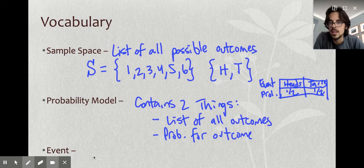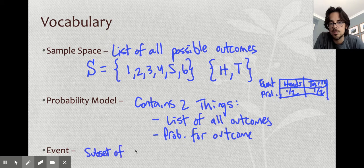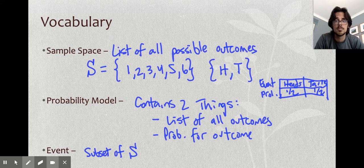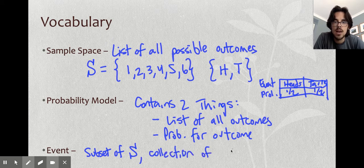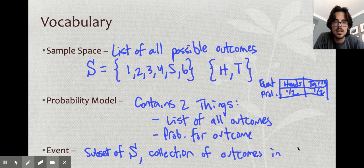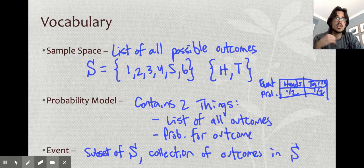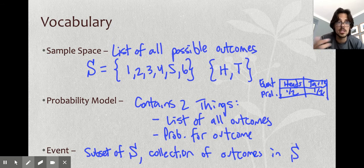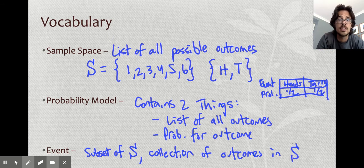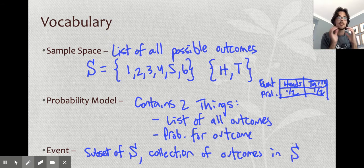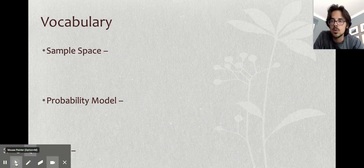The last vocab word on this page is called an event. An event is a subset of the sample space, a collection of outcomes in S. On my rolling a die example, I could look at the event getting a four or higher, or getting an odd number, or a prime number. If I was going to pick somebody in class at random, I could look at the event of you wearing glasses, or being at least 5'5". An event is just basically whatever you want it to be. Usually when we establish an event, it's because we want to know its probability.